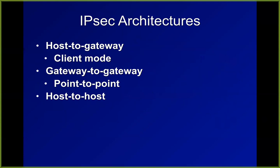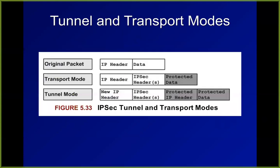Host to gateway would be a client going to a concentrator to get to work. Gateway to gateway would be point to point. In principle you could go from one host to another for something like peer-to-peer file sharing. There's a transport mode and a tunnel mode, which is one of the things that is unnecessarily complicated about IPsec.